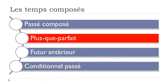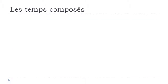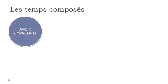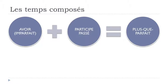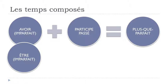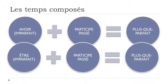Now le plus-que-parfait follows exactly the same rule. First, avoir — if you're not sure, just put avoir — but avoir should be at the imparfait form, then the participe passé, and you get your plus-que-parfait. For the same exceptions, you use être at the imparfait form, then the participe passé, and it gives you the plus-que-parfait. Let's review avoir and être at the imparfait.